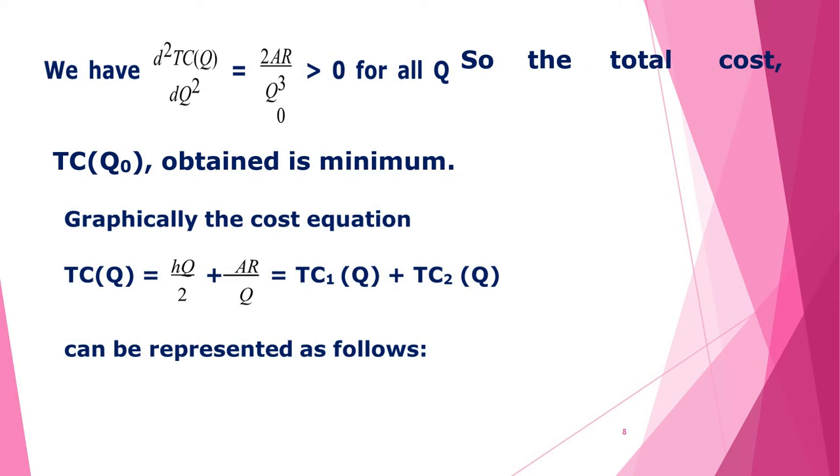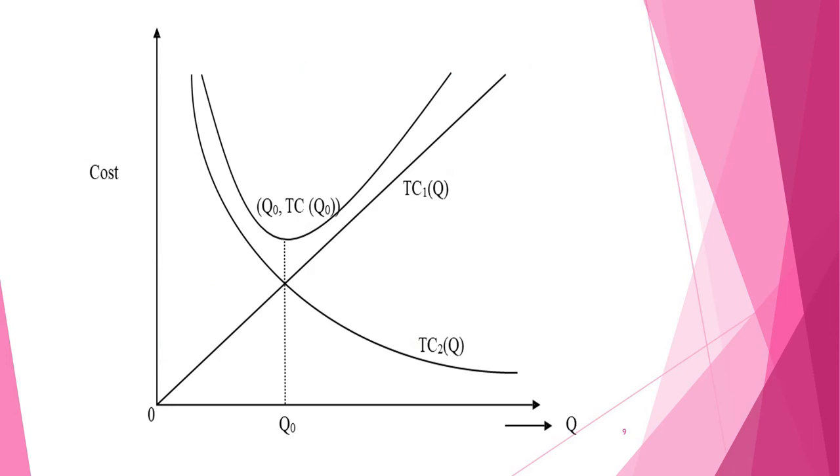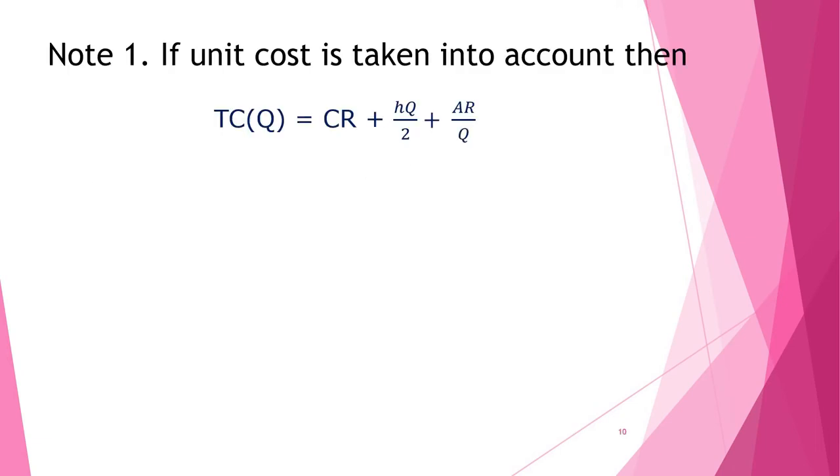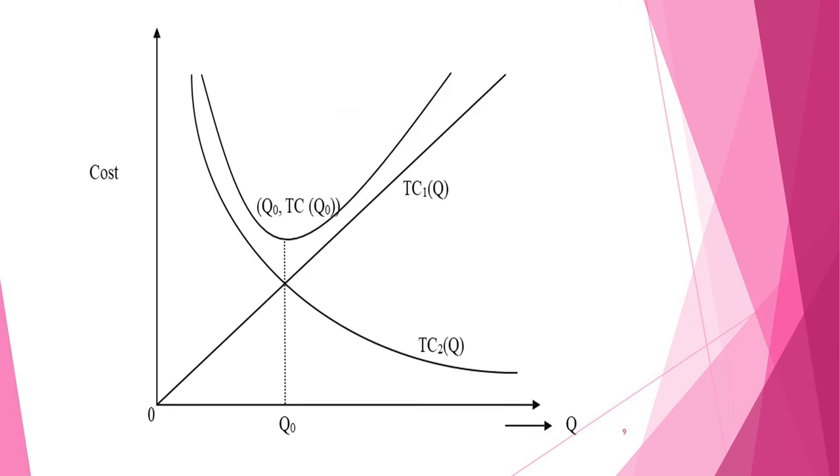Let us see the graphical representation of total cost. Total cost is the sum of holding cost and ordering cost. Denote total cost by TC₁ and ordering cost by AR/Q. So now total cost is TC₁ + TC₂. TC₁ is passing from the origin and ordering cost is decreasing with respect to Q. The point of intersection of TC₁ and TC₂ is Q₀, and correspondingly we will have optimum total cost, which is in the figure TC(Q₀).